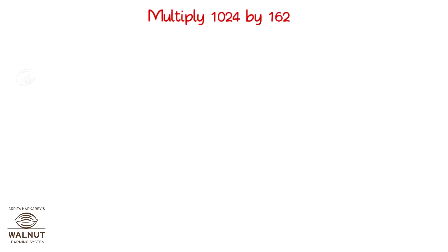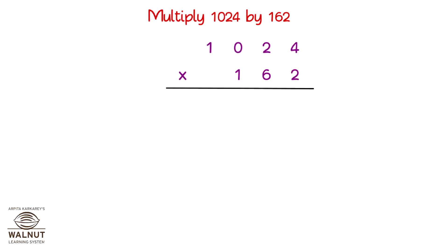Multiply 1024 by 162. We do it systematically. Two fours are 8. Two twos are 4. Two zeros are 0. Two ones are 2.